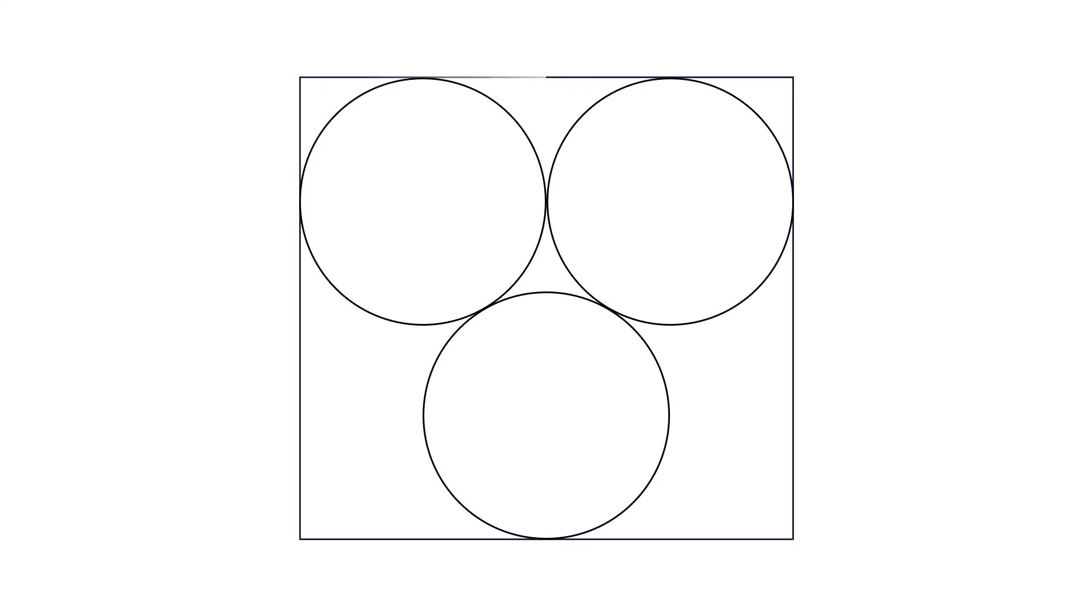We have three identical circles touching each other, each with radius 1. There is a rectangle touching all three circles, as shown in the figure. Now, the question is, can you figure out the area of this rectangle?